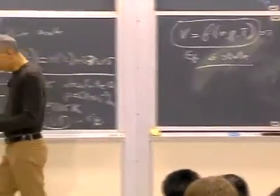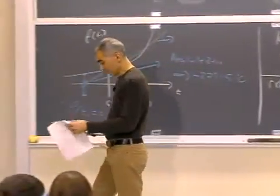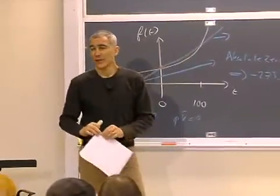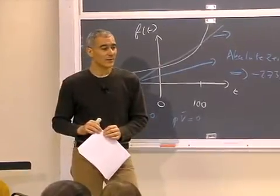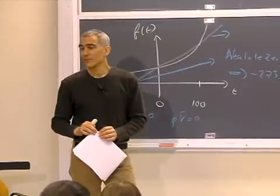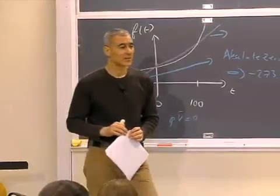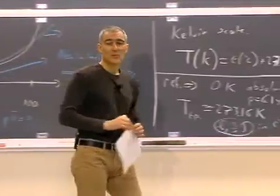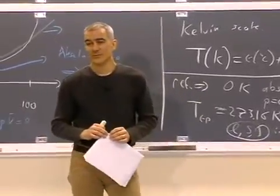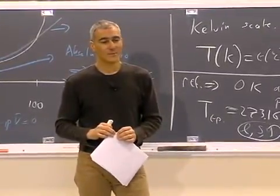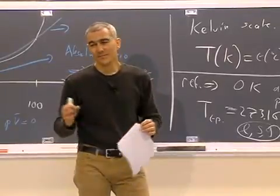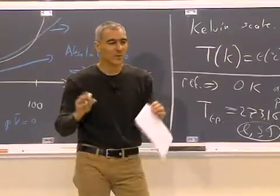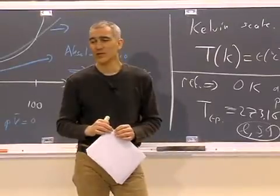Now, if you're an engineer, and you use the ideal gas law to design a chemical plant or a boiler or electrical plant, a steam plant, you're going to be in big trouble. Your plant's going to blow up. Because the ideal gas law works only in very small range of pressures and temperatures for most gases.